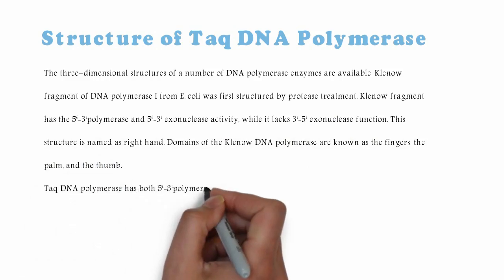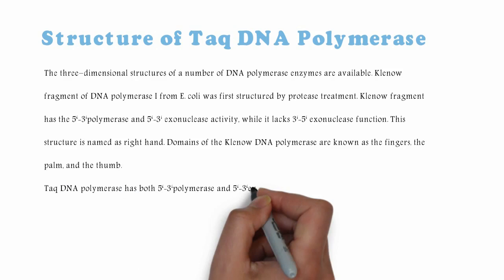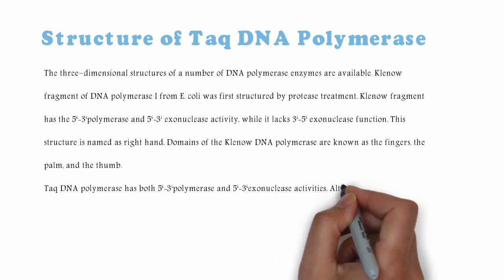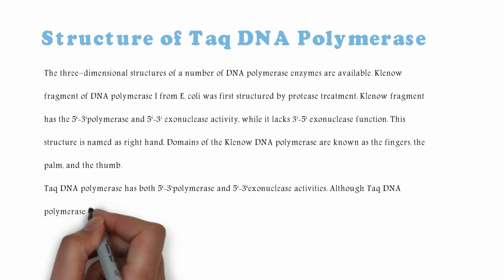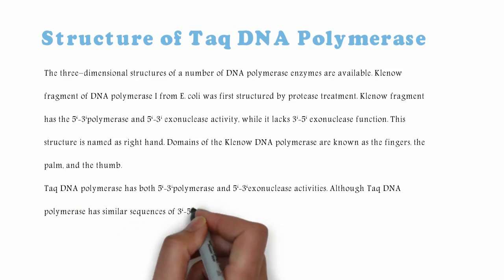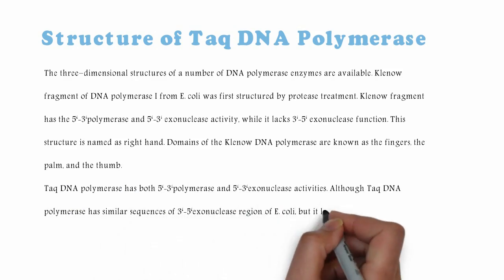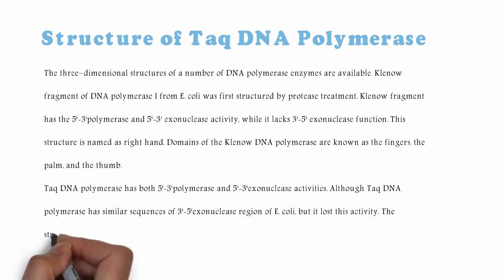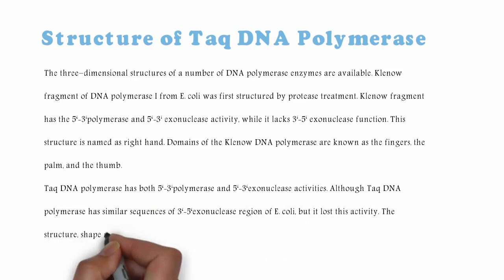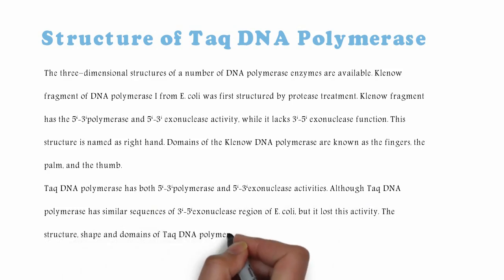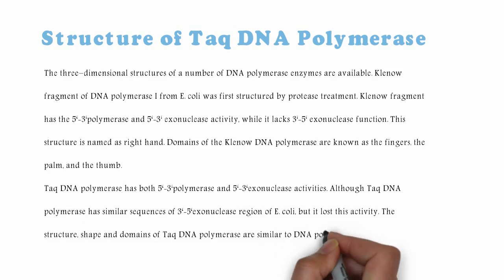Taq DNA Polymerase has both 5' to 3' polymerase and 5' to 3' exonuclease activities. Although Taq DNA Polymerase has similar sequences in the 3' to 5' exonuclease region of Escherichia coli, it has lost this activity. The structure, shape, and domains of Taq DNA Polymerase are similar to the DNA Polymerase I Klenow fragment.